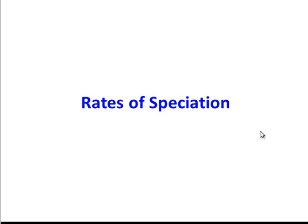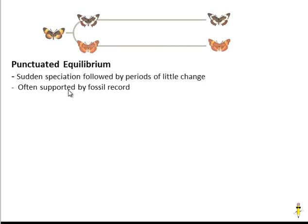Our last note about speciation: how quickly does this happen? For most organisms, it takes many, many years. But the rate can be inconsistent. Sometimes it can happen via something called punctuated equilibrium, in which there is a sudden speciation event — perhaps due to a dramatic environmental change — followed by periods of very little change.